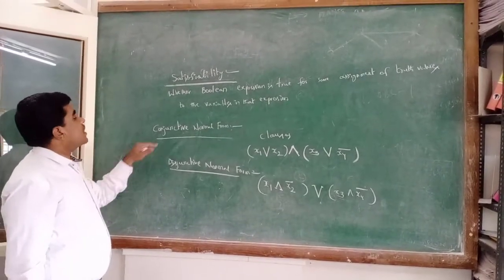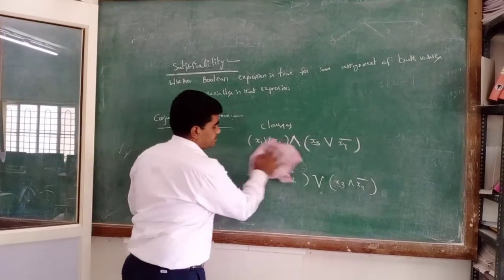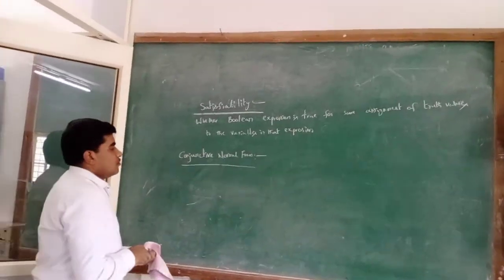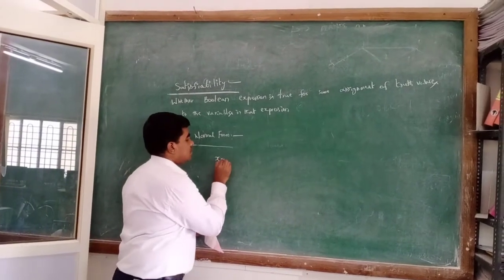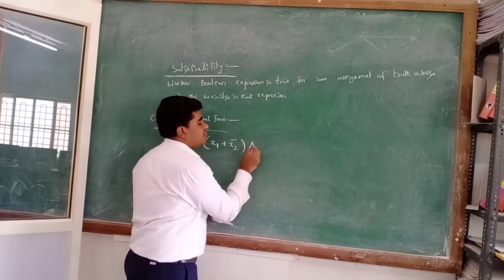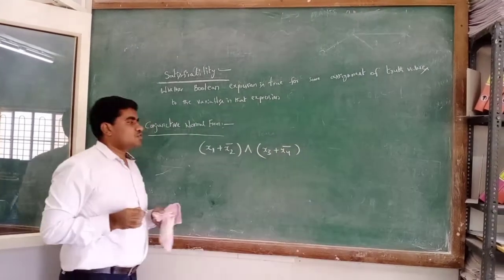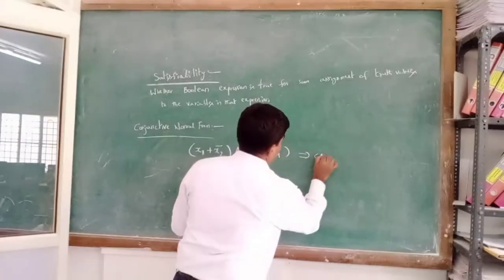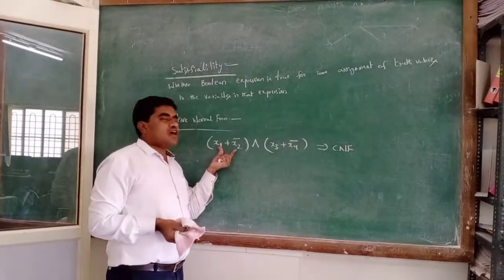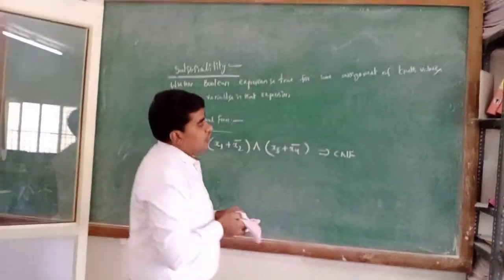In satisfiability, we apply only conjunctive normal forms. For example, a simple CNF formula: (x1 + x2 bar) · (x3 + x4 bar). Here, plus represents OR and multiplication represents AND. The classes are separated with AND, and literals within each class are separated with OR.